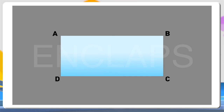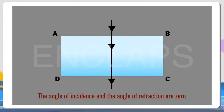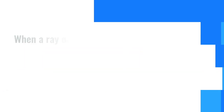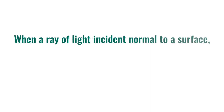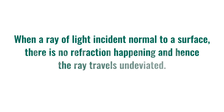What happens if a ray enters normal to the glass slab? The ray doesn't deviate and continues to travel in the same path. That is, the angle of incidence and the angle of refraction are both zero. So we can conclude that when a ray of light is incident normal to a surface, there is no refraction and the ray travels undeviated.